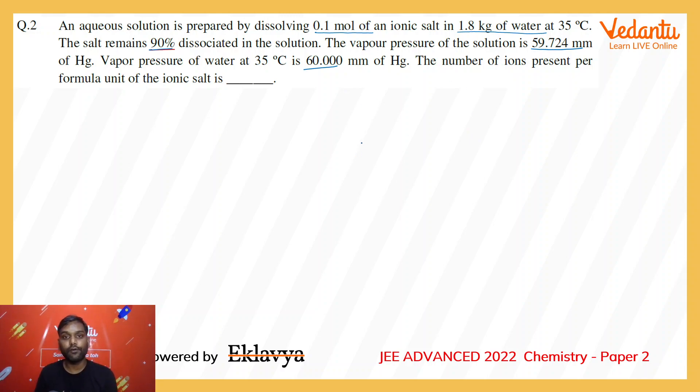So (P⁰ - Pₛ)/Pₛ is equal to i times the number of moles of salt divided by the number of moles of salt plus number of moles of water.